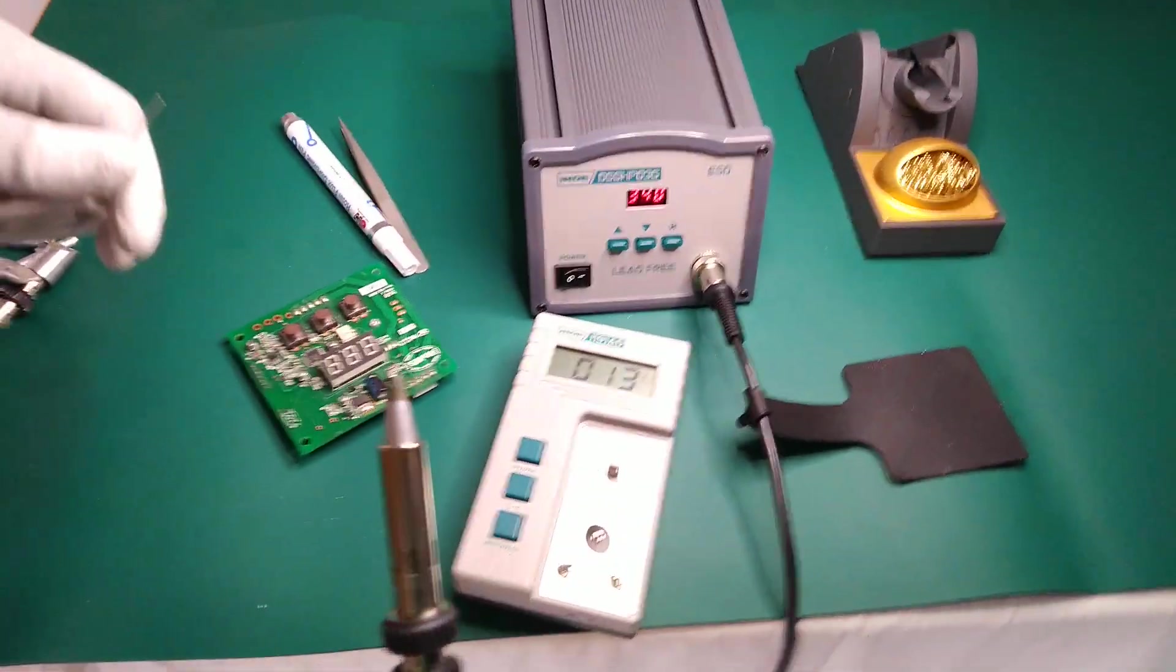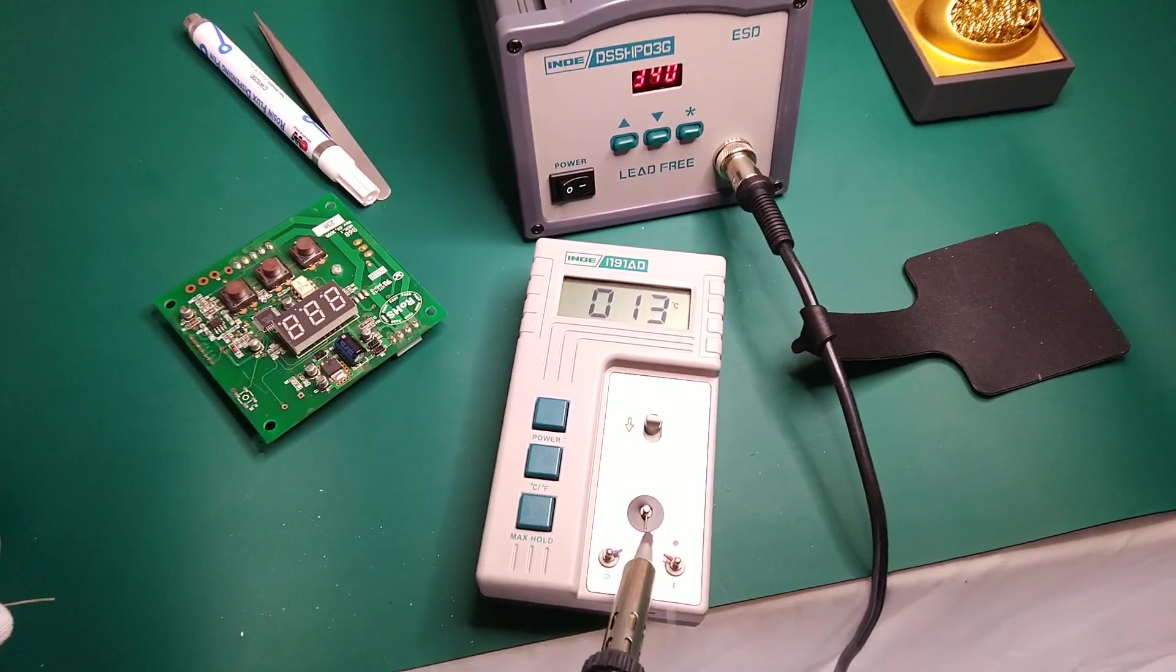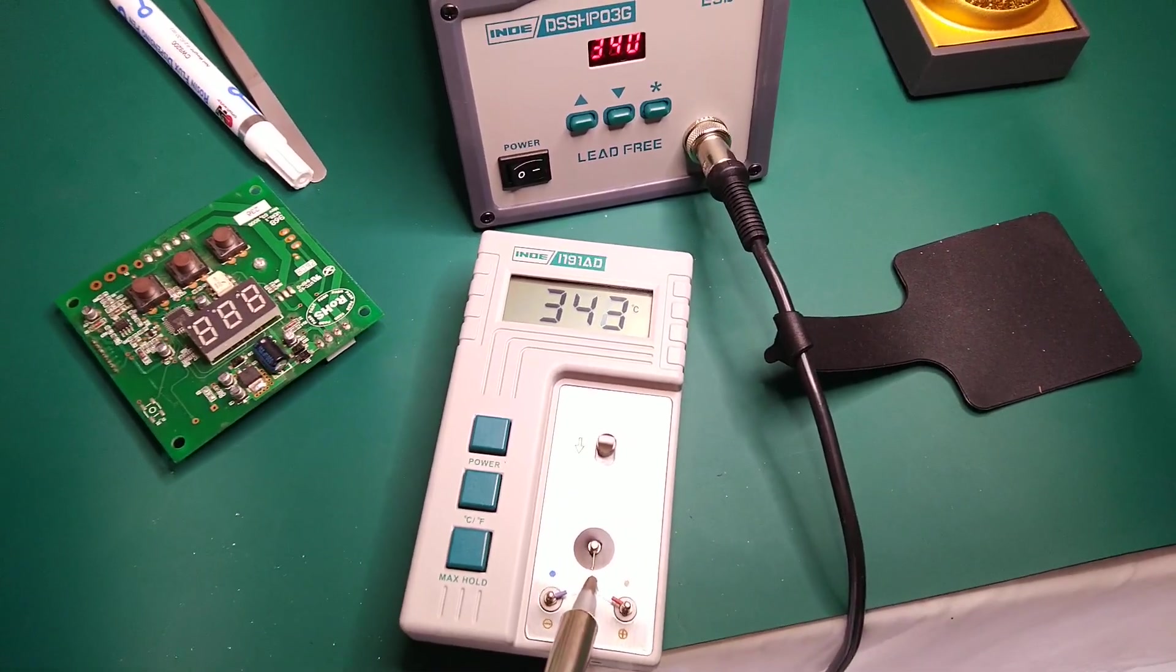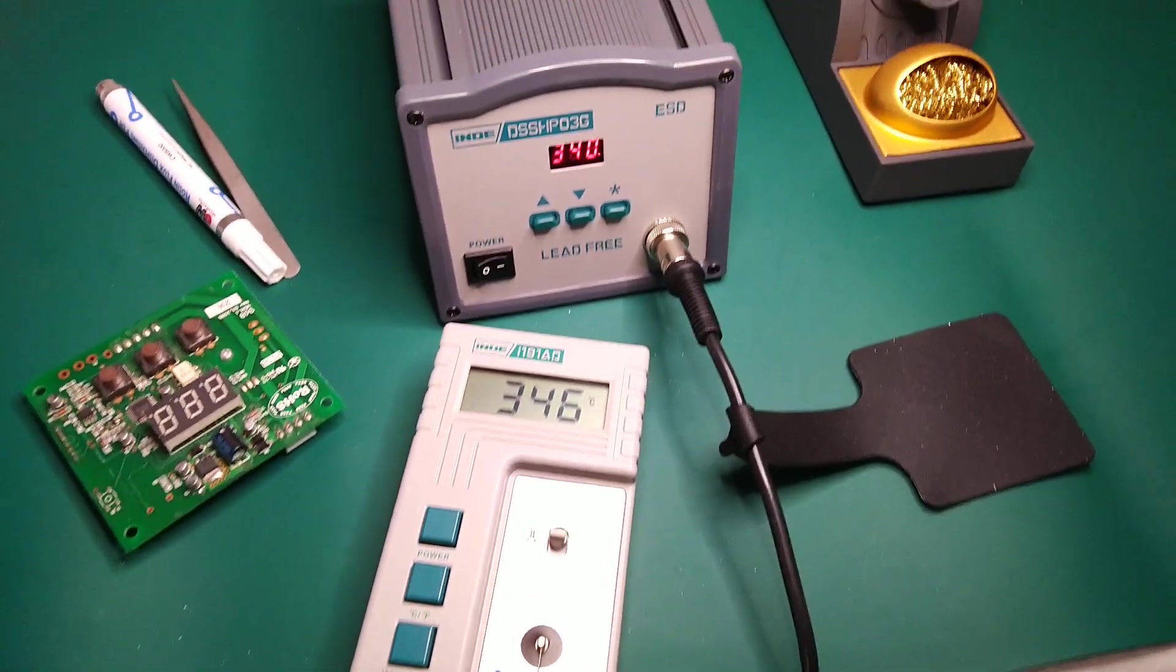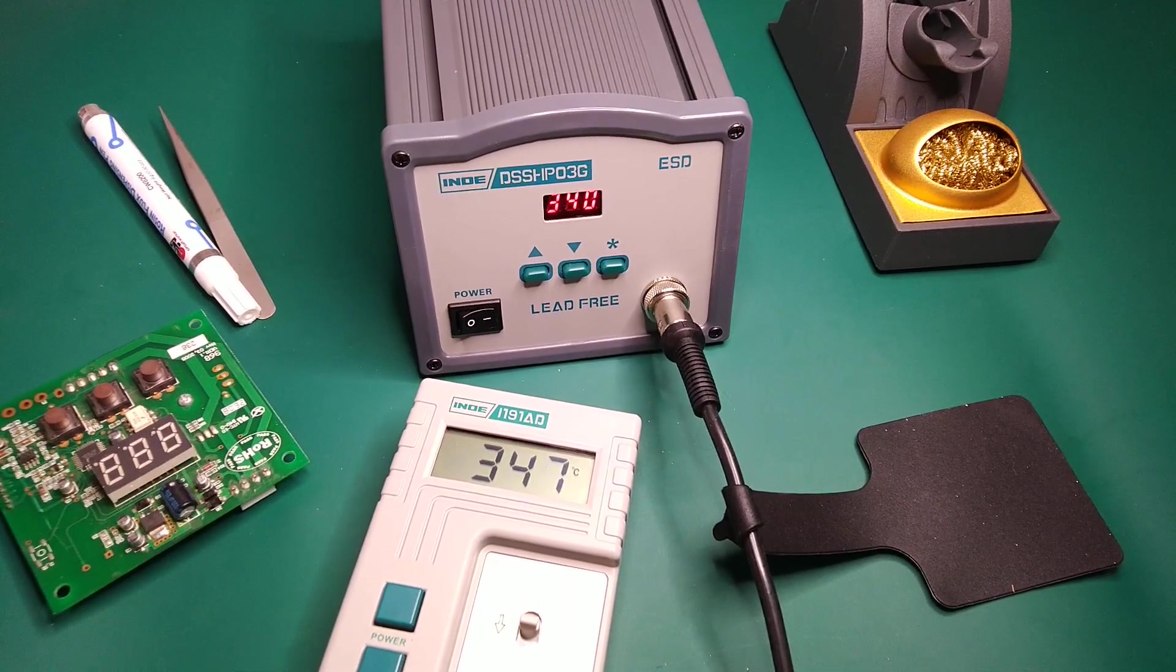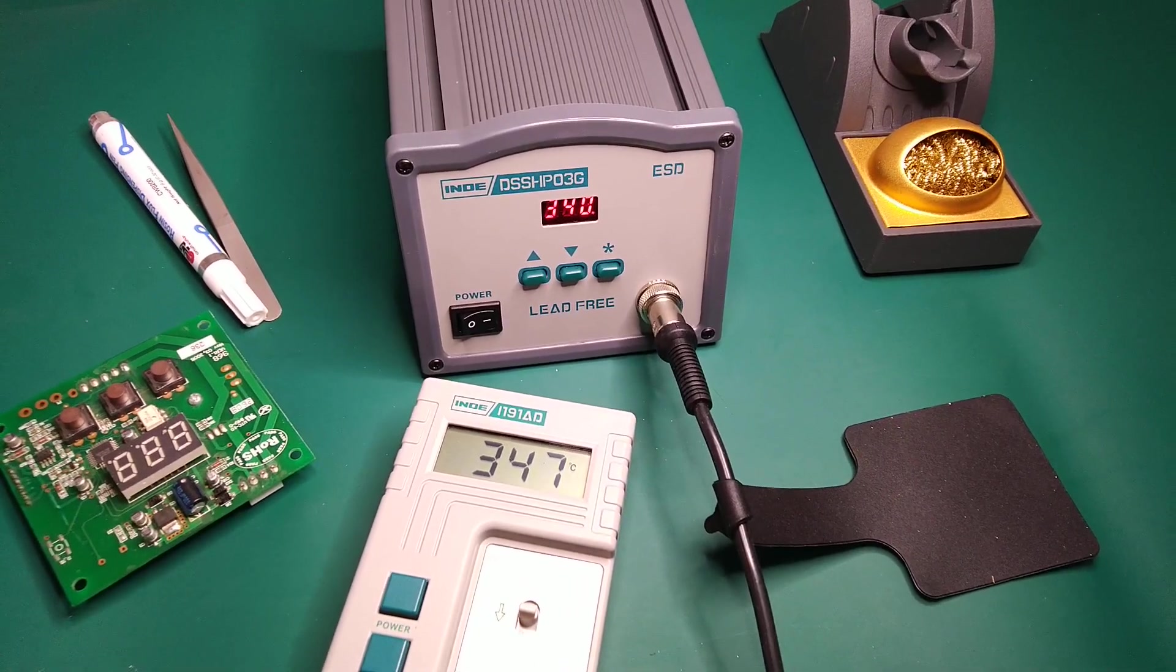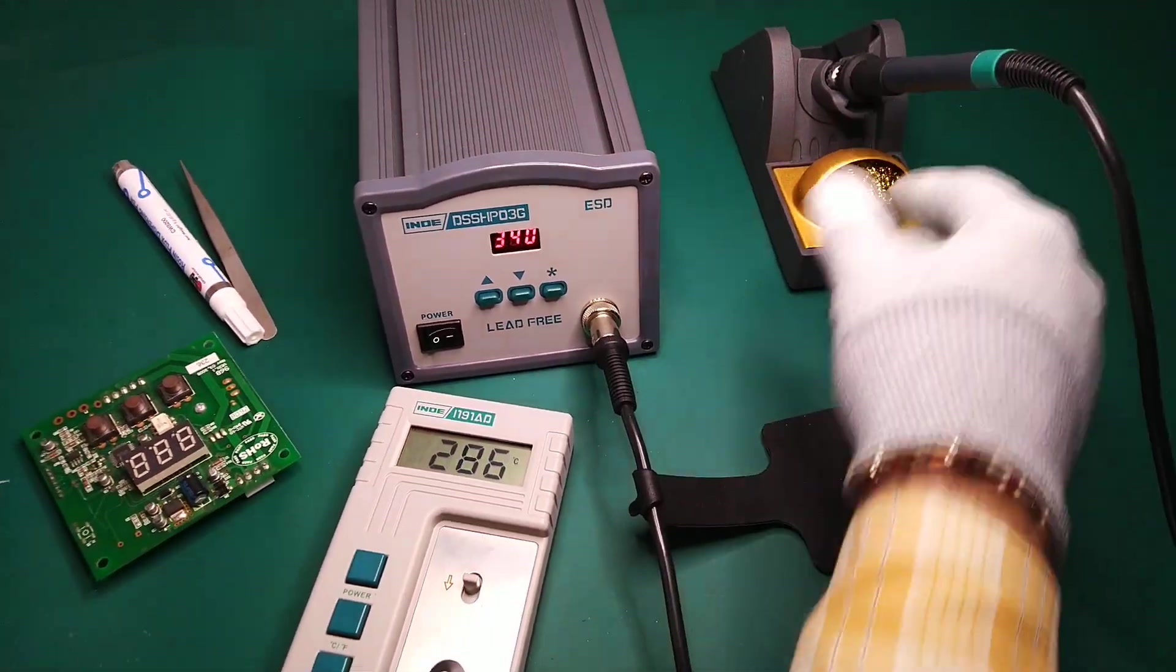We will measure the actual temperature by touching the thermocouple provided on top of this thermometer. Here we can see the set temperature is 340, but the actual temperature observed on the thermometer is 347. Now we will calibrate and match the temperature.